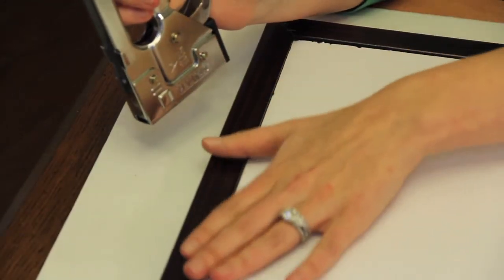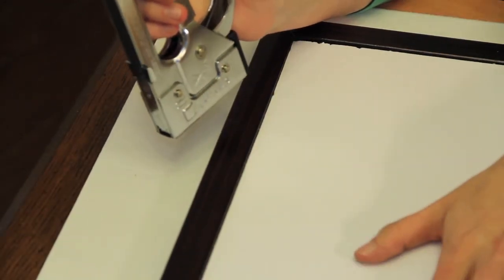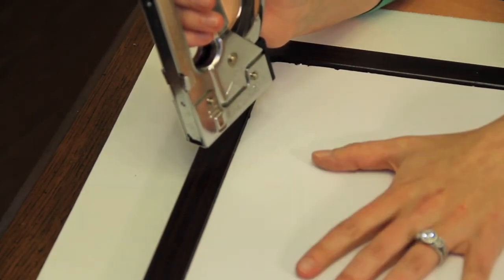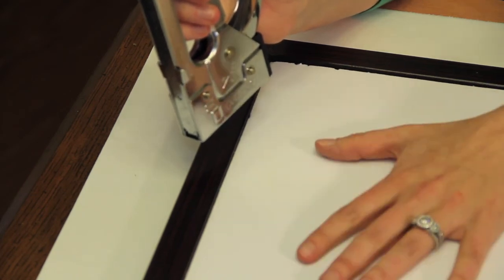You'll probably want to do six on the short sides, eight to ten on the long side. Once you have that all together, your glass is absolutely secure and your picture will be ready to go.